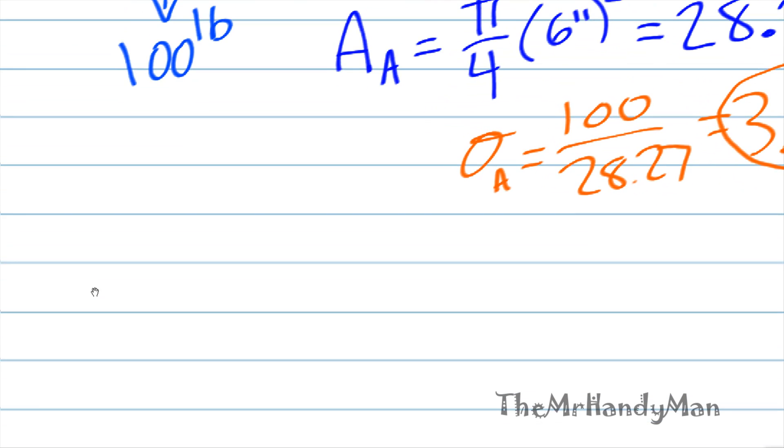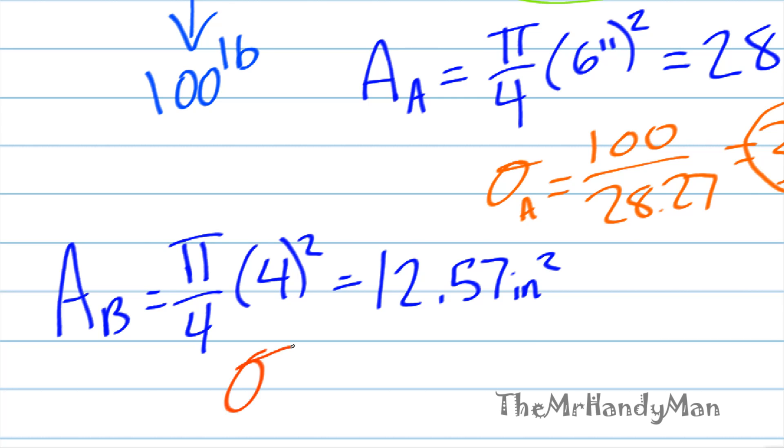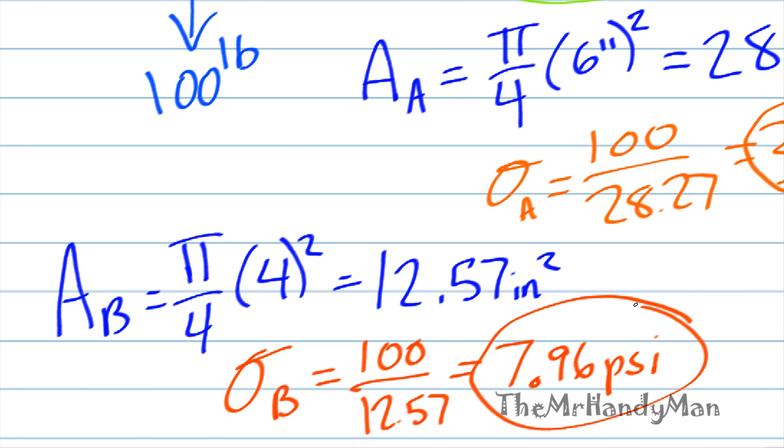Moving on, we have our area at B, which is going to follow the same principles, the same equations, except it's going to be four squared, which the area is then equal to 12.57 inches squared. To calculate the stress at B, we just do 100 over 12.57, which is equal to 7.96 psi. And that's at B.